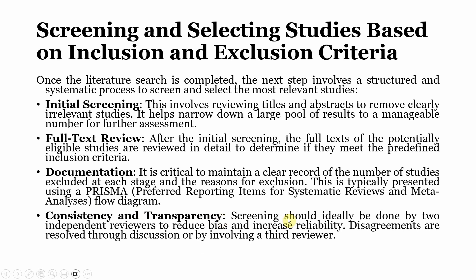Consistency and transparency: screening should ideally be done by two independent reviewers to reduce bias and increase reliability. In practice, researchers working under supervision, doing PhDs, or fellowships may not have access to independent reviewers or research assistants, so they may have to do it on their own and get it checked later. Disagreements are resolved through discussion or by involving a third reviewer.